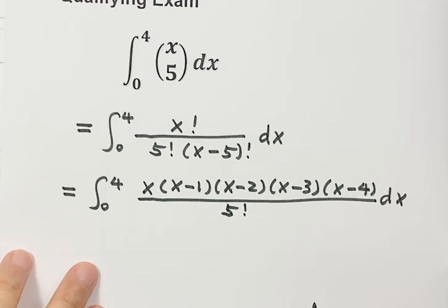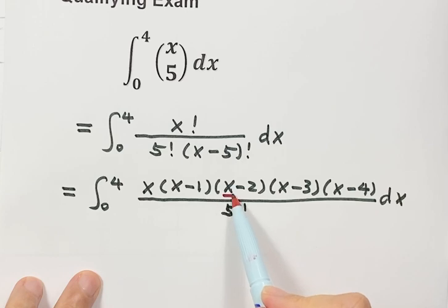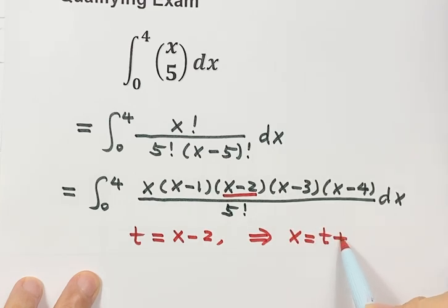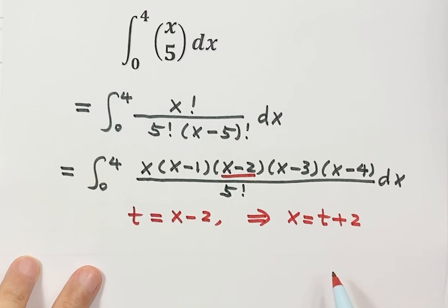Next, we're going to set a new variable. We're going to let the new variable equal the middle term, this one. So we're going to set a new variable t equals x minus 2. Then solve for x, so x equals t plus 2. Then here, dx equals dt.